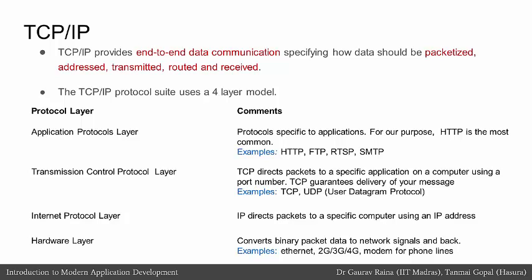At the TCP layer, TCP directs packets to a specific application on a computer using a port number. It's important to note that TCP actually guarantees delivery of your message. Another transport protocol is UDP, the User Datagram Protocol. At the IP layer, IP directs packets to a specific computer using an IP address. At the hardware layer, binary packet data is converted to network signals and back — for example, Ethernet, 3G, 4G, or modem for phone lines.